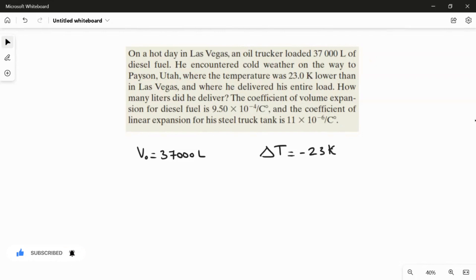Here they gave two values of the volume expansion coefficient: one for diesel fuel and one for the truck tank. We don't need to worry about the tank coefficient because we're not going to use it. We have to use only the diesel fuel value because we're going to find the change in volume, and then find how much fuel he delivered.